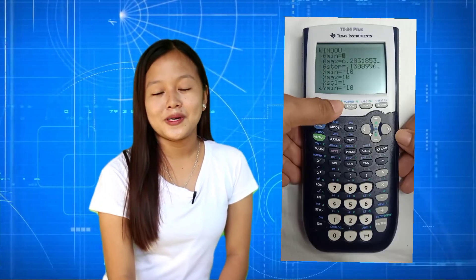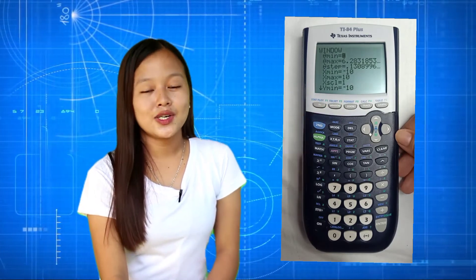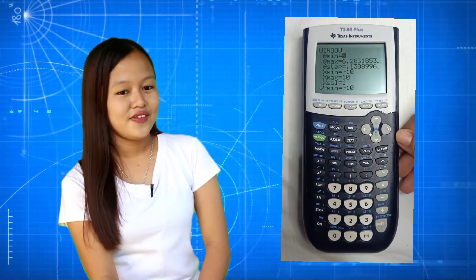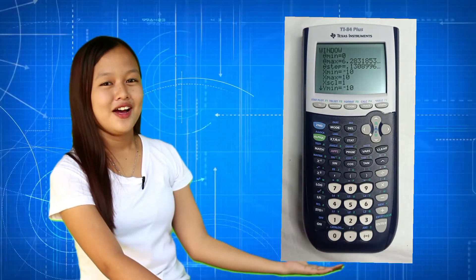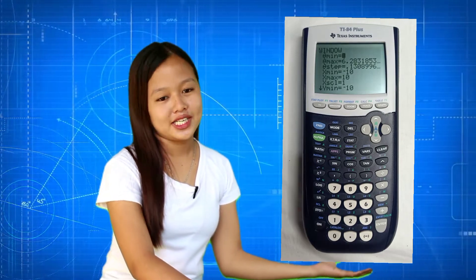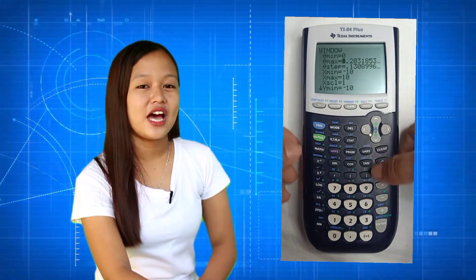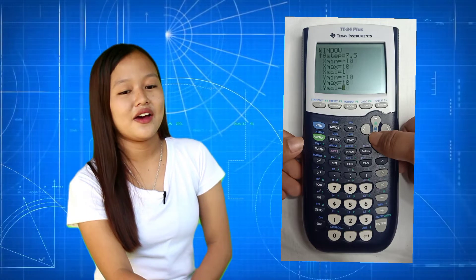Set the window. Press the window button to adjust the window of the graph. And later after, let's input the needed data. Now, we have our window data. For theta min, let's use 0. For theta max, we have 360. For theta step, we have 7.5. And for the x min, we have negative 10. For the x max, we have 10. For the y min, we have negative 10. For the y max, we have 10. And then, we are all set.